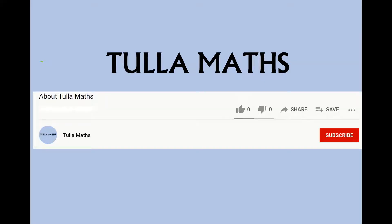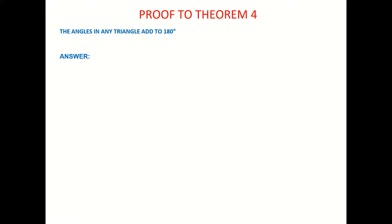Welcome to another tutorial video from Tullamaths. This is the proof to Theorem 4: that all angles in any triangle must add up to 180 degrees. In each proof that we do, you have to list out what you're given, what you want to prove, any constructions to get you your proof, and then finally your proof. You will see that those steps carry through all our proof videos and in class.